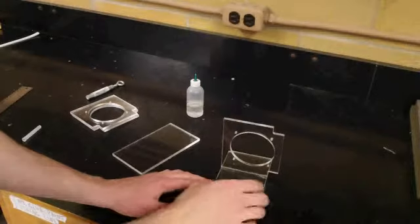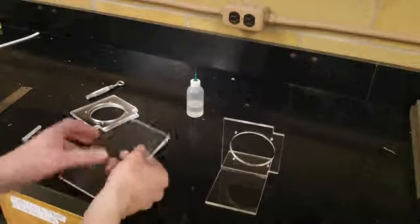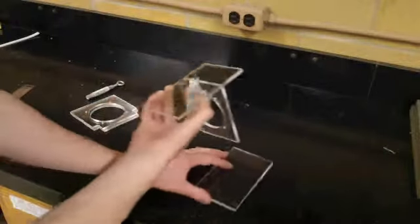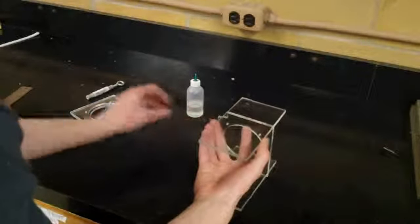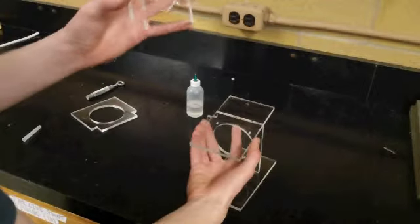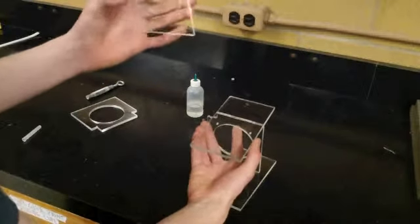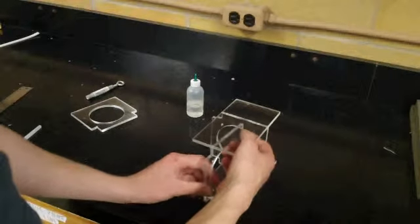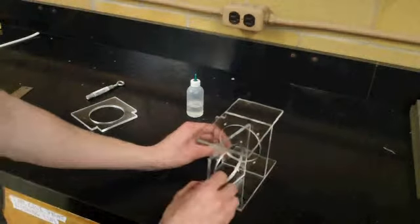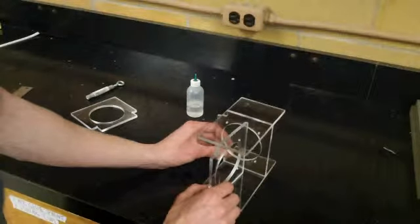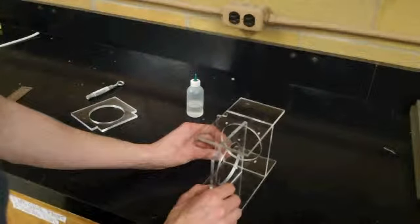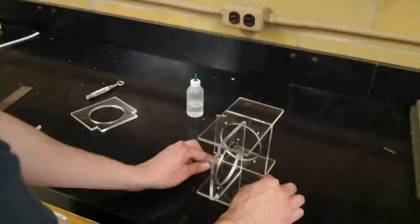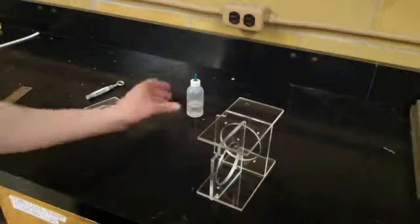After this has had a minute or so to dry, we can go ahead and add the other side. And this is where it helps to have another one of these pieces that holds the PVC or a turnbuckle of the same width to just help give you some support and make sure that this angle is as close to 90 degrees as we can get it.